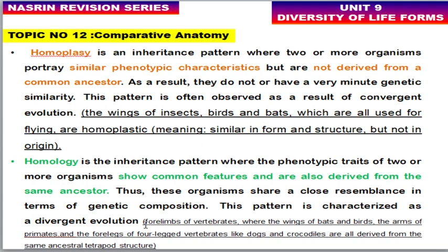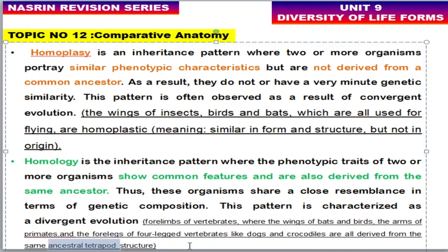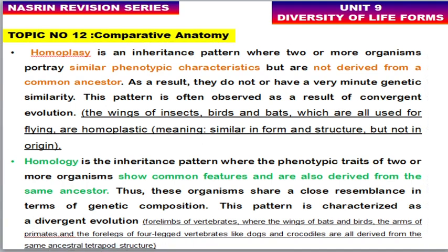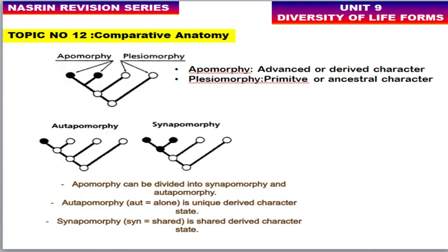Homology is an inherent pattern where phenotypic traits of two or more organisms share a common feature and derive from the same ancestor, resulting in resemblance in genetic composition. This pattern is observed by divergent evolution. So: homoplasy → convergent evolution; homology → divergent evolution.